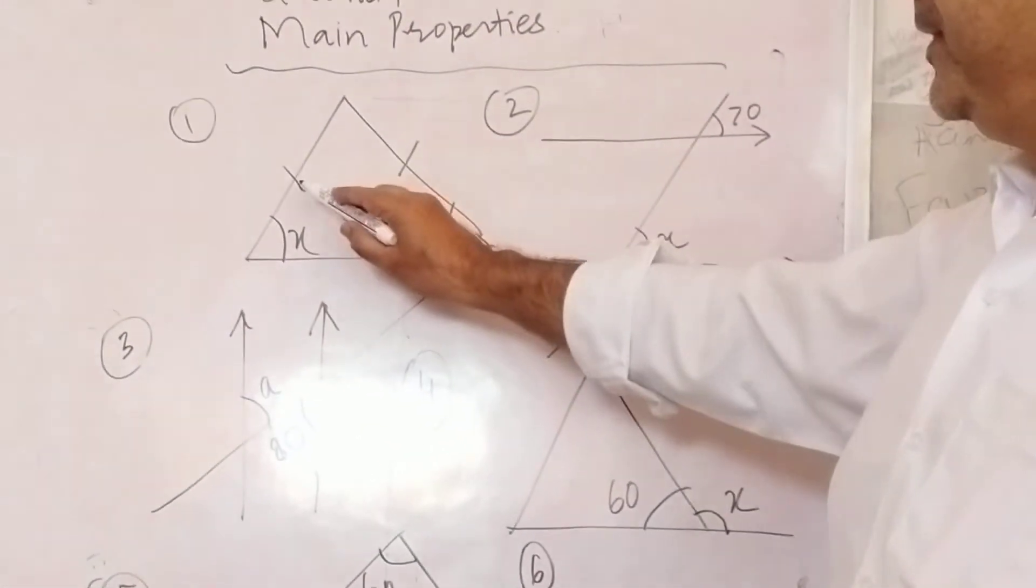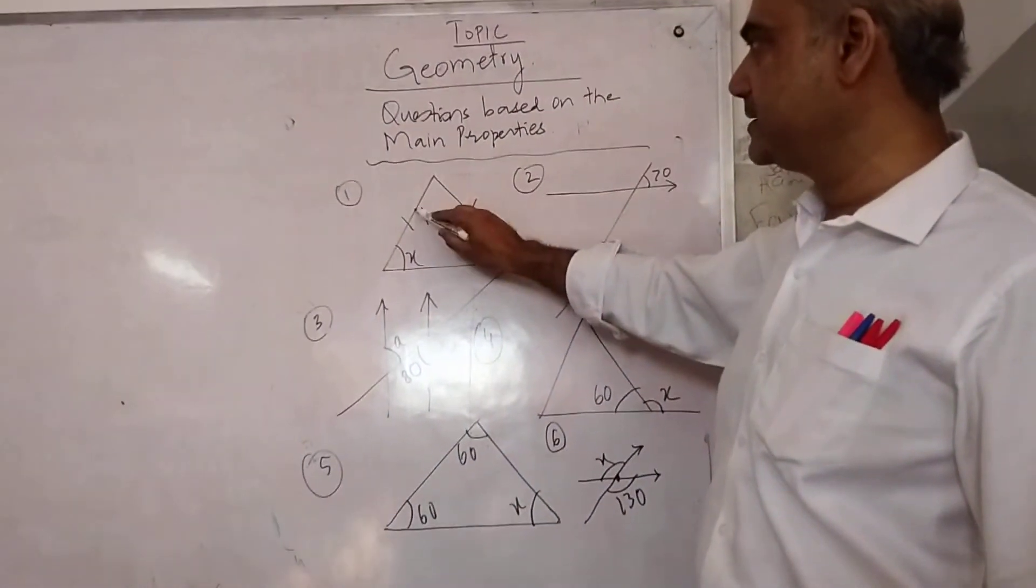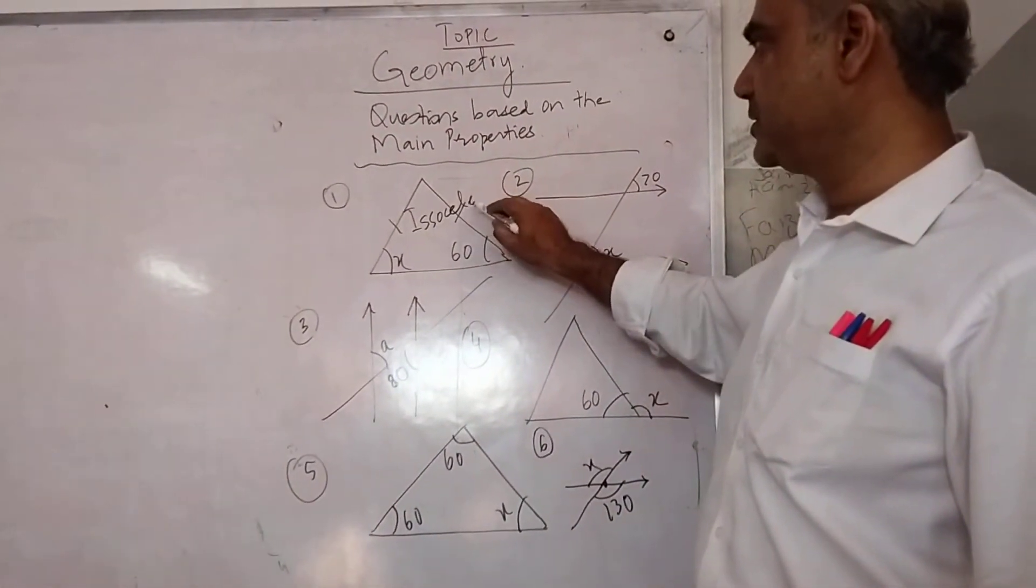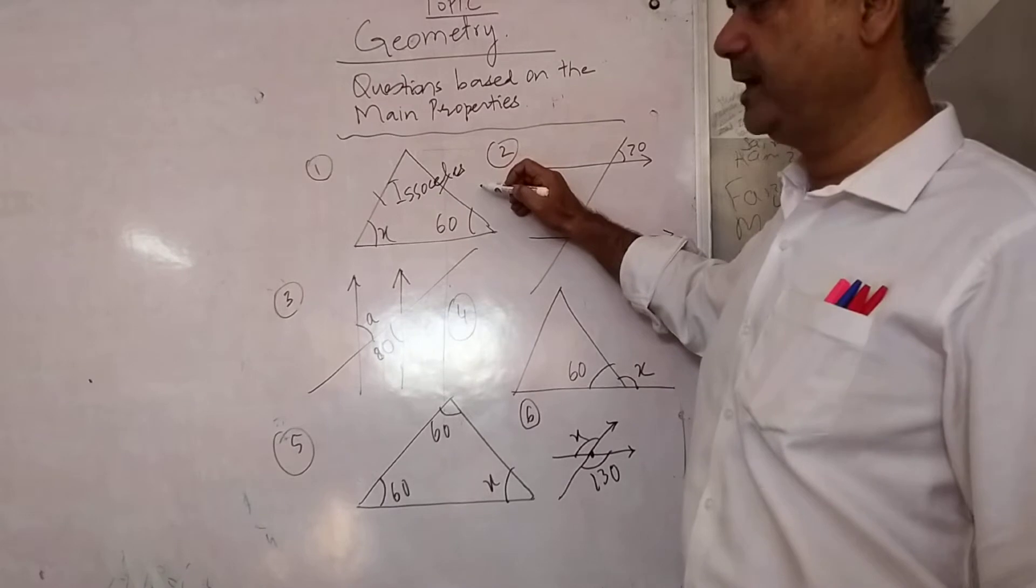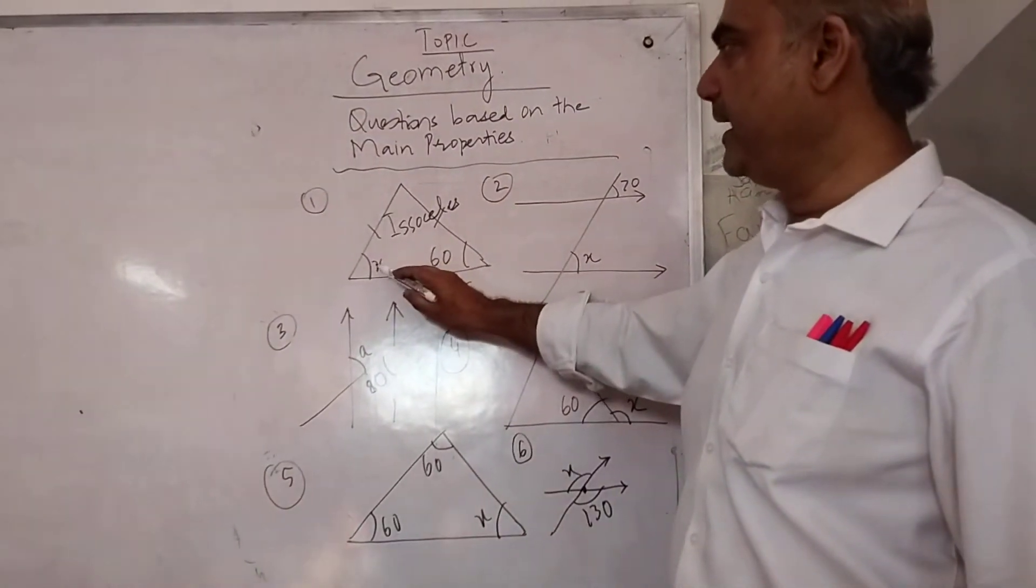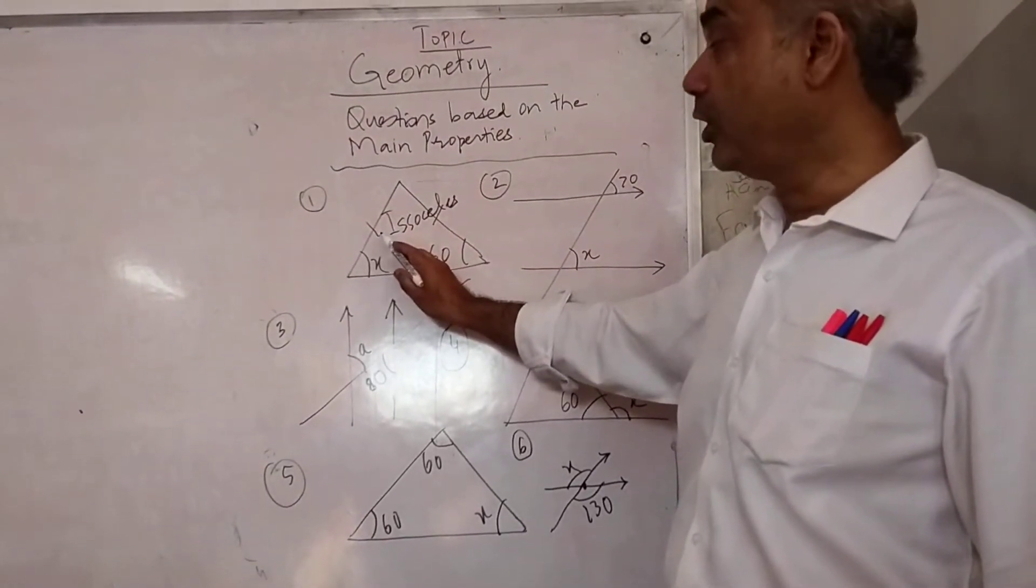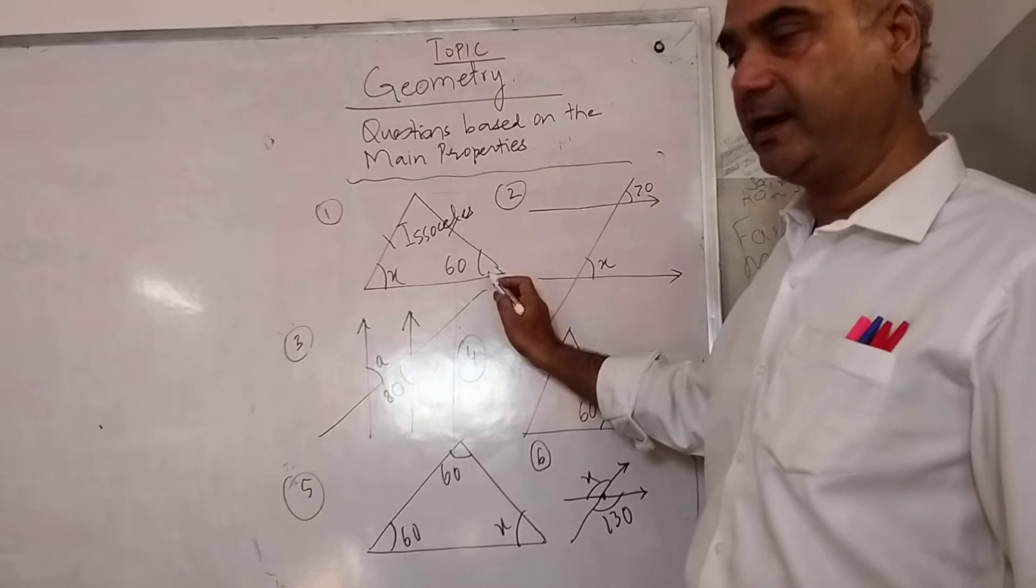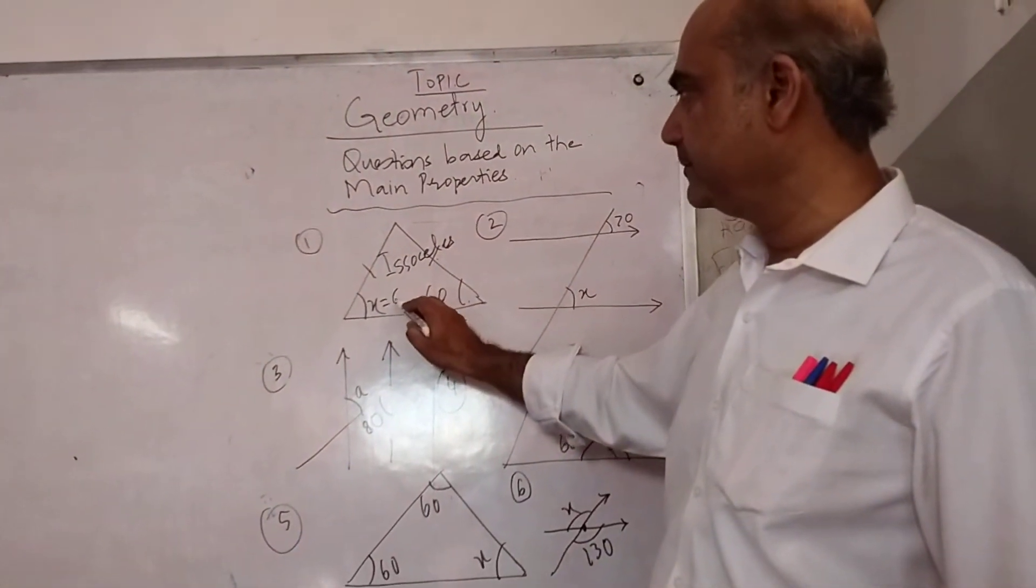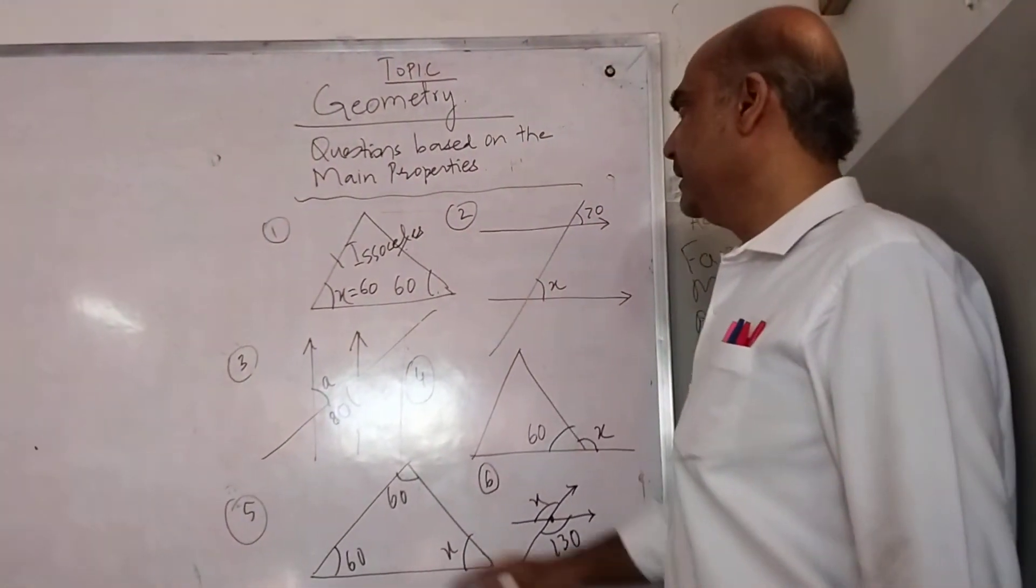For example, these two markings represent what? They are same. What type of a triangle is this? This is an isosceles triangle. Many students know that two sides are equal in a triangle, but the angles opposite to the equal sides are also equal. So this angle over here is 60, right? So this angle will also be 60. This is the first property related to isosceles triangles.